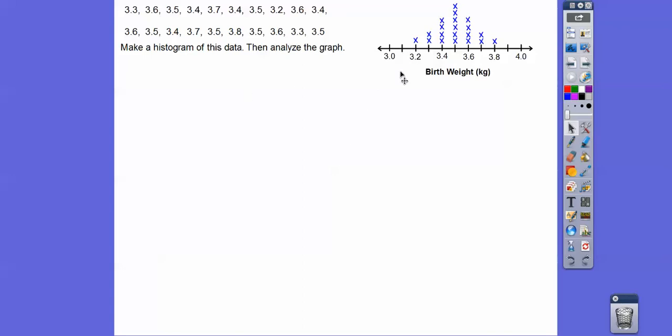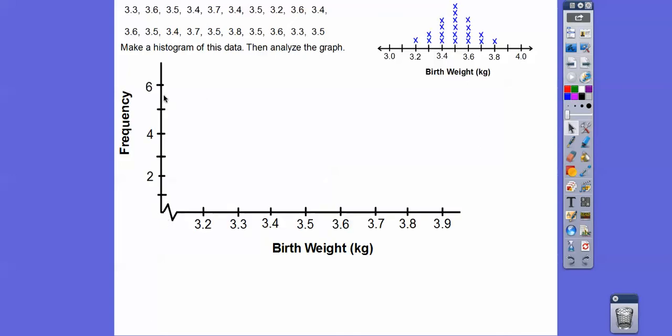So there would be 1 at 3.2, there would be 2 at 3.3, 4 at 3.4, 6 at 3.5, and so on. Down here we'd list the weights, and over here we'd list the frequencies. And then you build a chart right here, a vertical bar for the frequencies right here, and then down here is going to be the baby's weights in kilograms.